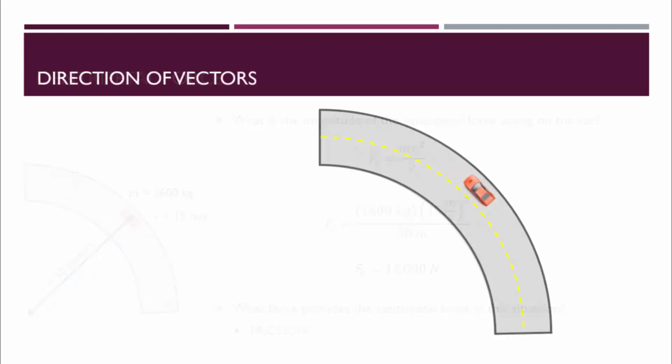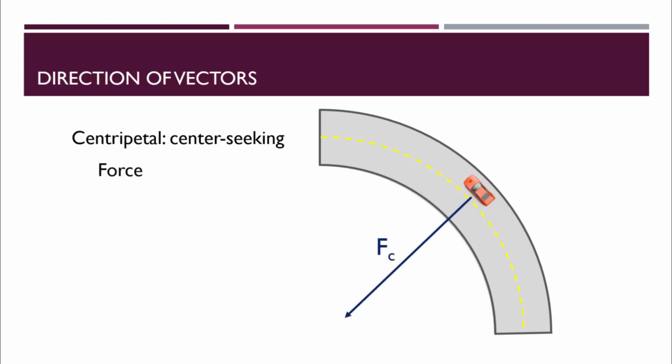Before we're done, let's take a look at the direction of some very important vectors. Centripetal is a word with Latin roots that means center seeking, so anything described as centripetal should point toward the center. Centripetal force is a force vector that points toward the center of the circle, and centripetal acceleration is an acceleration vector that points toward the center of the circle. The velocity is a different story — the velocity of an object traveling in a circle is described as tangential, meaning like a tangent. A tangent is a line that touches a circle at just one point. At this moment, the velocity of the car is in this direction.